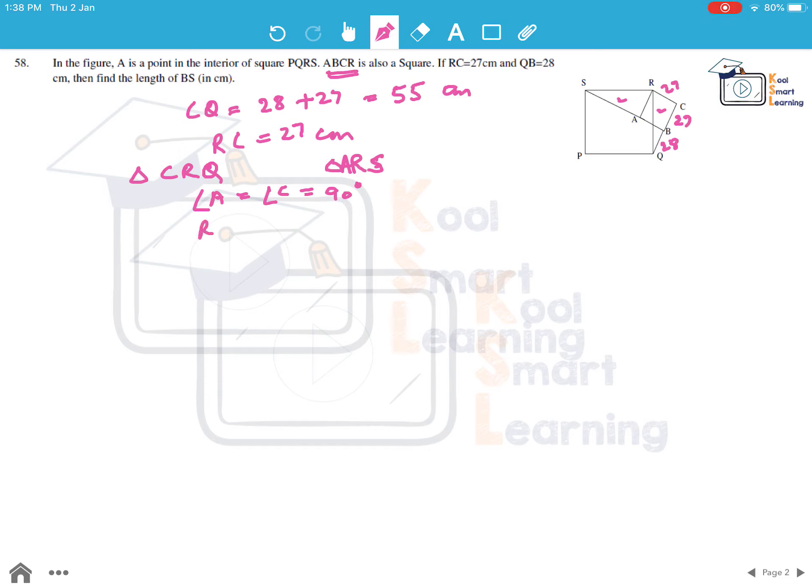RS is equal to RQ, sides of the square. And side AR is equal to side RC. These are also the sides of square. So by RHS, these two triangles will be congruent.